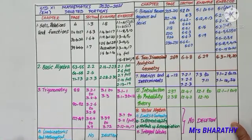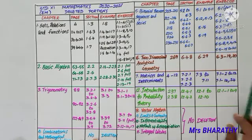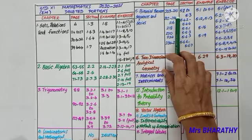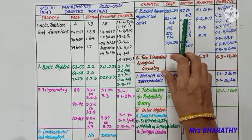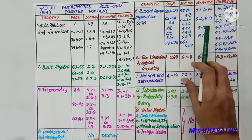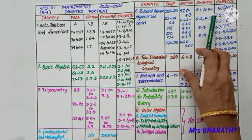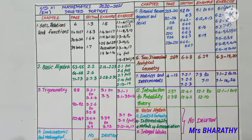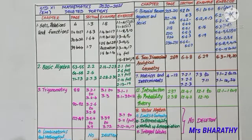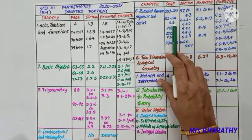Chapter 5: Binomial Theorem, Sequences and Series - from page number 203 to 210, binomial theorem expansion and the subsections 5.2 to 5.3 are deleted. Examples 5.1 to 5.11 are deleted. The full exercise 5.1 is deleted from page number 212 to 214.